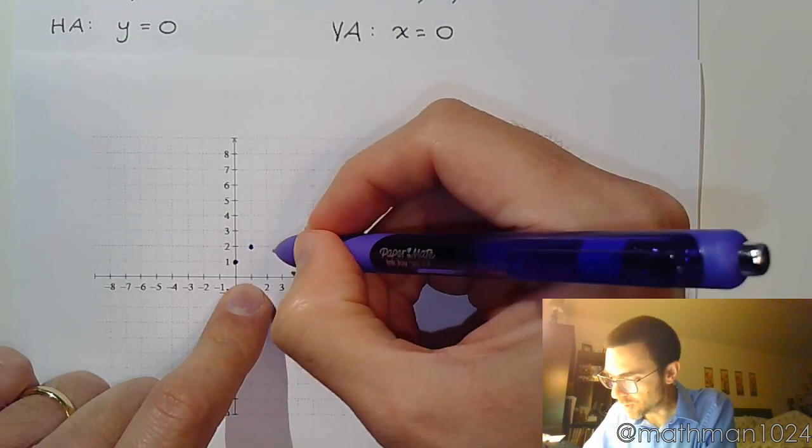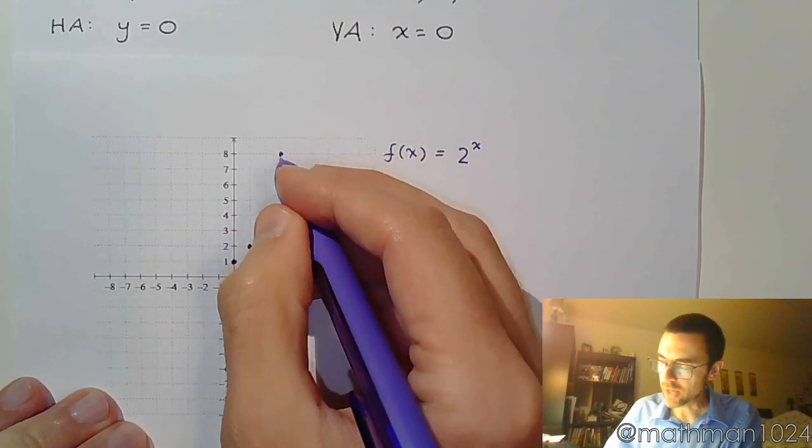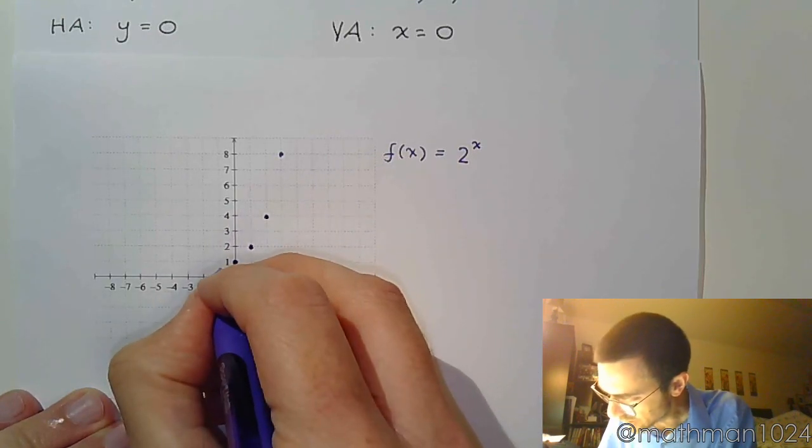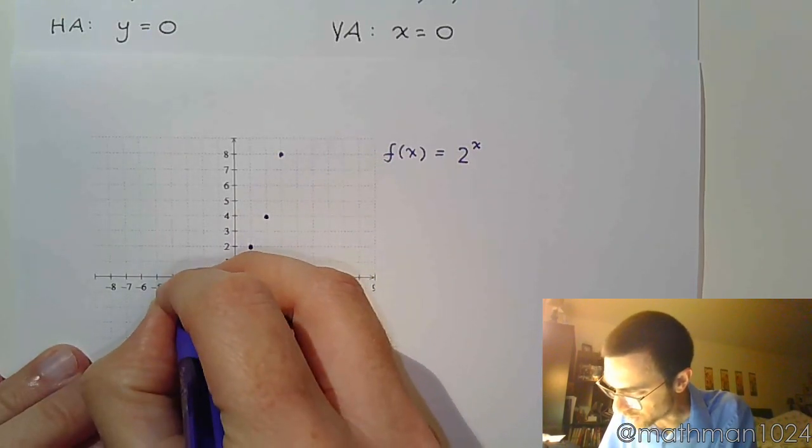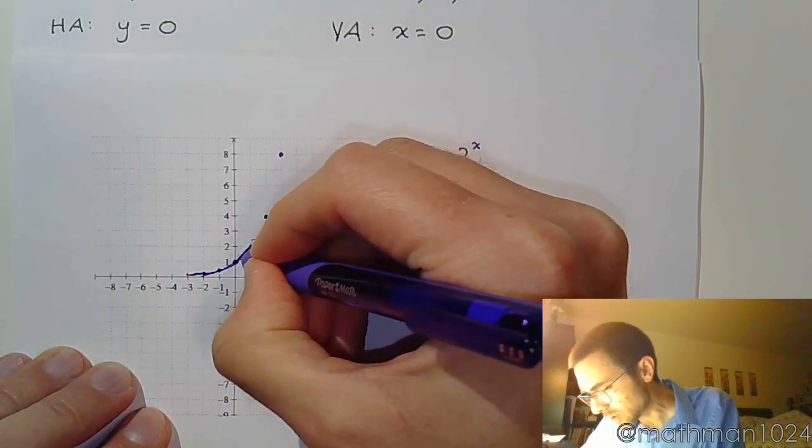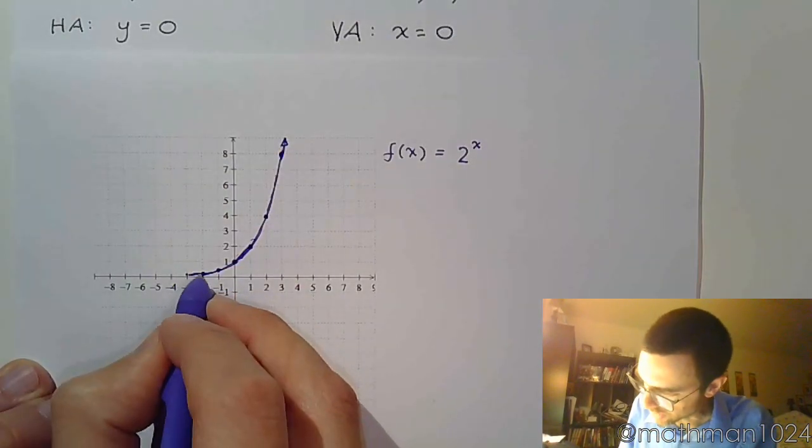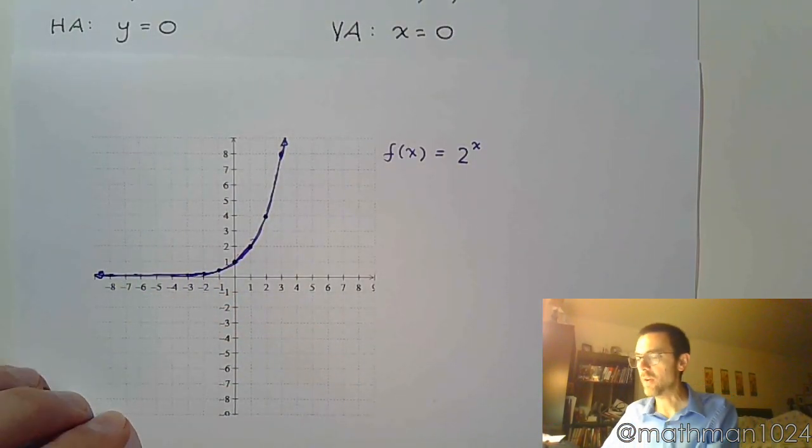So, times 2 gives me 2, times 2 is 4, times 2 is 8. And we kind of cut that in 2 as we go to the left. So there's the 1 half, the 1 fourth, and so on. And so this was the shape that we have for our exponential. Looks like this.